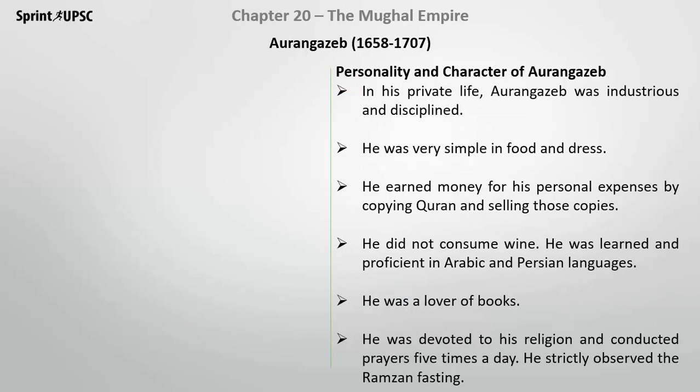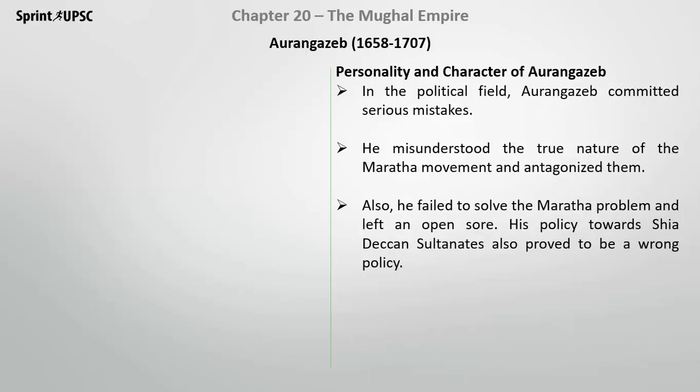Talking about his personality and character: in his private life, he was industrious and disciplined. He wore simple clothes and ate simple food. He earned money for his personal expenses by copying the Quran and selling those copies. He did not drink wine. He was learned and proficient in Arabic and Persian languages. He was a lover of books and devoted to his religion, reading prayers 5 times daily and observing Ramzan fasts very strictly.